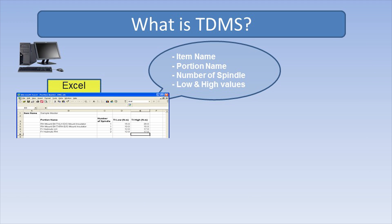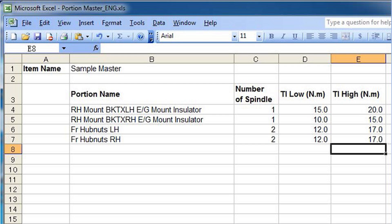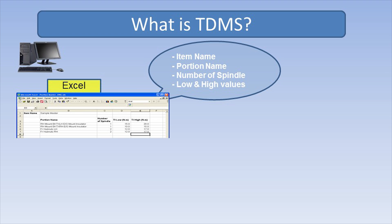For the initial setup, create a portion master file for your working process using the familiar Excel format. Upload your details into a portable device which has the TDMS software installed.